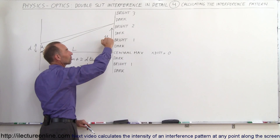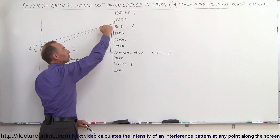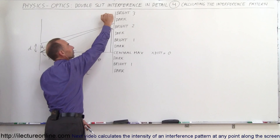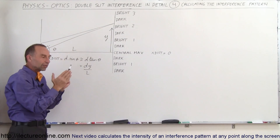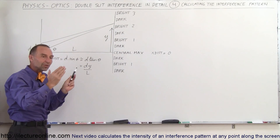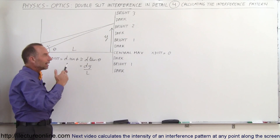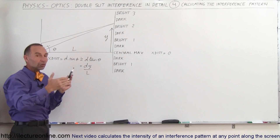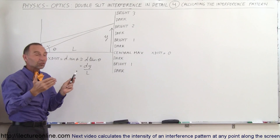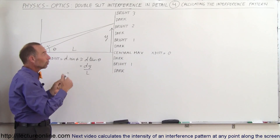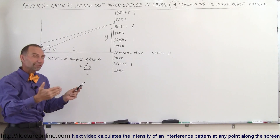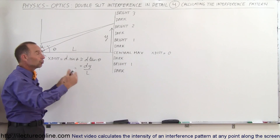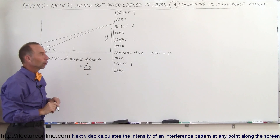As you go farther out, the spots alternate: destructive, constructive, destructive, constructive, destructive, constructive. The extra distance traveled keeps increasing and becomes a larger and larger fraction relative to the wavelength — a half wavelength, a full wavelength, one and a half, two wavelengths, and so forth.